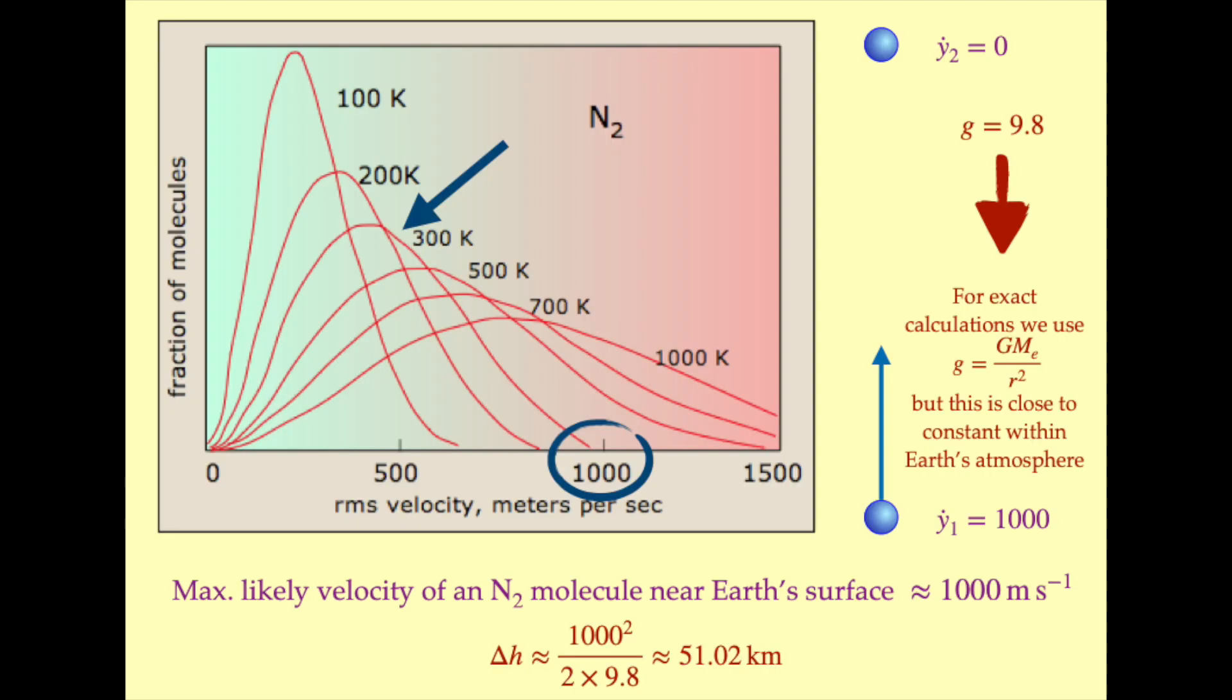The range of velocities that gas molecules can have as a function of temperature is given by the Maxwell-Boltzmann distribution, which is shown here. Earth's mean surface temperature is slightly less than 300 Kelvin, so looking at the diagram we see that for nitrogen this gives a mean molecular velocity of approximately 500 meters per second. We can also see that the vast majority of molecules have a velocity that is less than 1000 meters per second in magnitude.